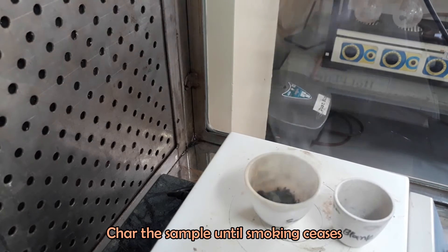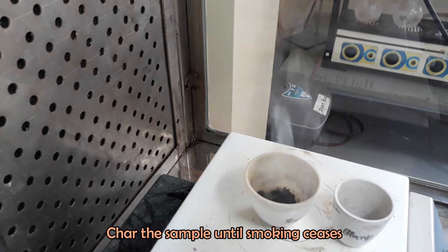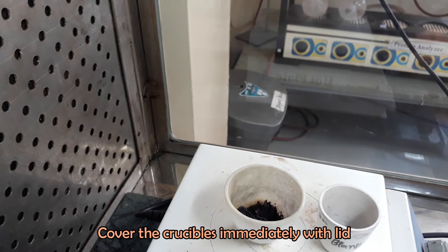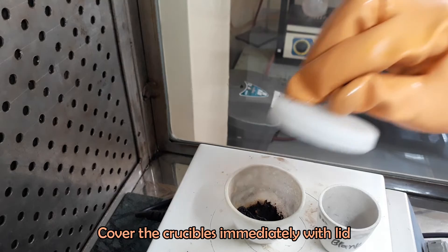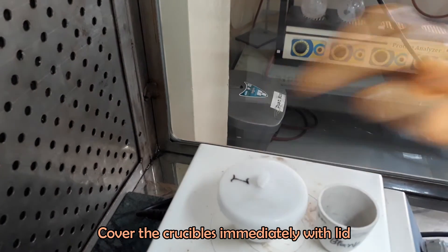Char the sample until smoking ceases. After 30 minutes of heating, black burning sample is seen from which no smoke is coming out. Cover crucibles immediately with lid.